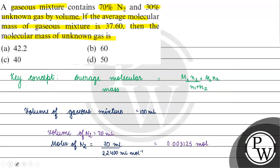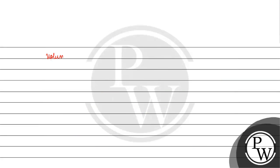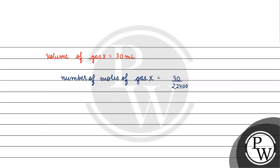Now let's talk about the volume of gas X, which is 30 ml. The number of moles of gas X is 30 divided by 22,400, which equals 0.00134 moles.